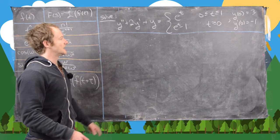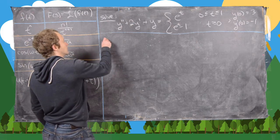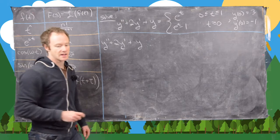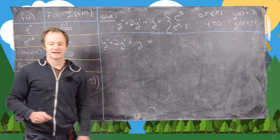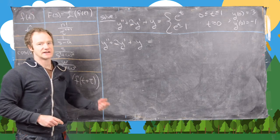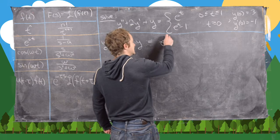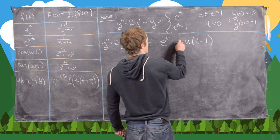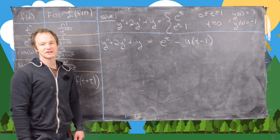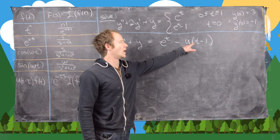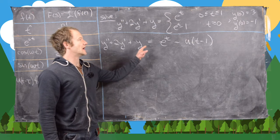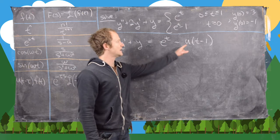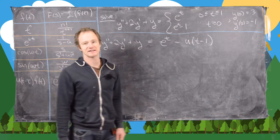The first thing we want to do is rewrite this differential equation. So we have y double prime plus 2y prime plus y, and then we're going to write the right-hand side using the unit step function. This is e to the t plus the unit step function shifted to the right by 1, minus that. Between 0 and 1, the unit step is 0, giving us e to the t. Between 1 and infinity, it equals 1, giving us e to the t minus 1 — exactly our piecewise function.